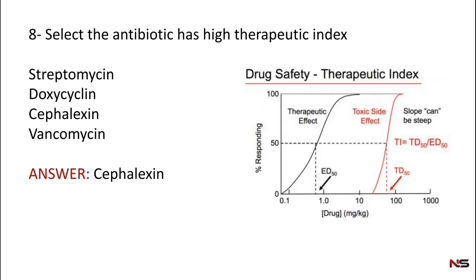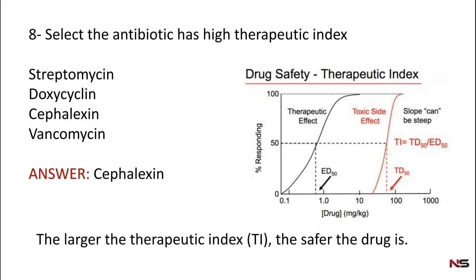For finding out therapeutic index, you can use the formula LD50 by ED50 or TD50 by ED50. That is median lethal dose divided by median effective dose. Larger the therapeutic index, the safer the drug.